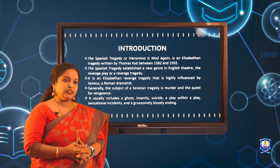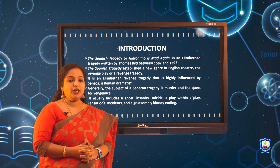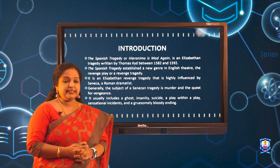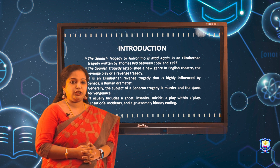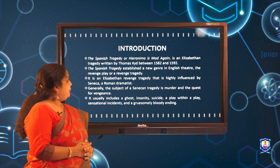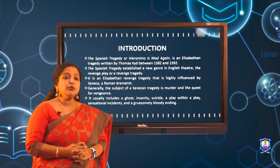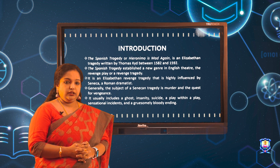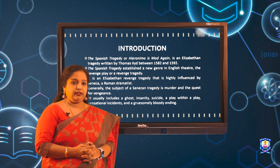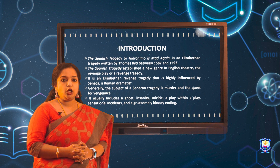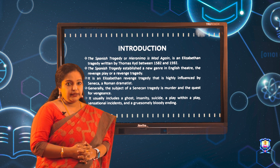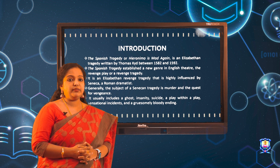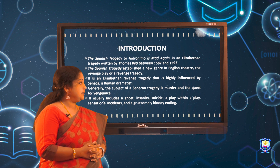Coming to the introduction, The Spanish Tragedy or Hieronymus is Mad Again is an Elizabethan play written by Thomas Kitt between 1582 and 1592. The play establishes a new genre in the Elizabethan theatre called the Revenge Tragedy or the Revenge Play. This was highly influenced by Seneca, a Roman dramatist.